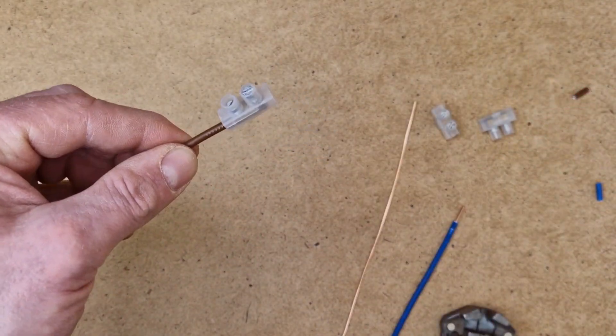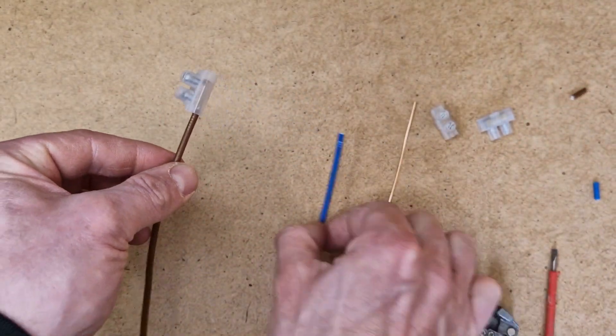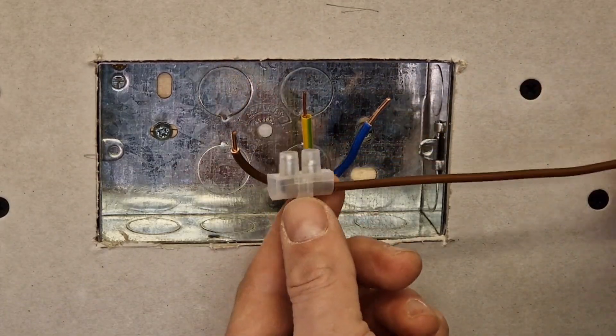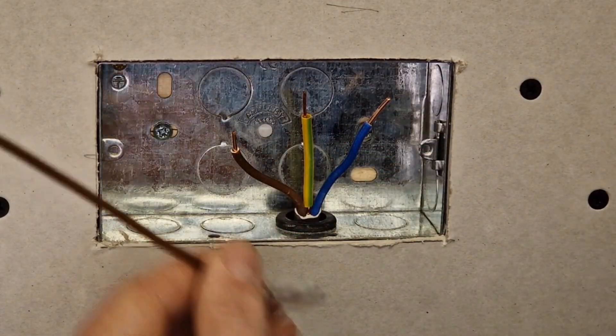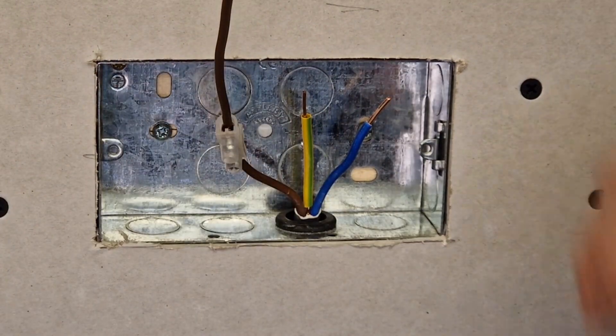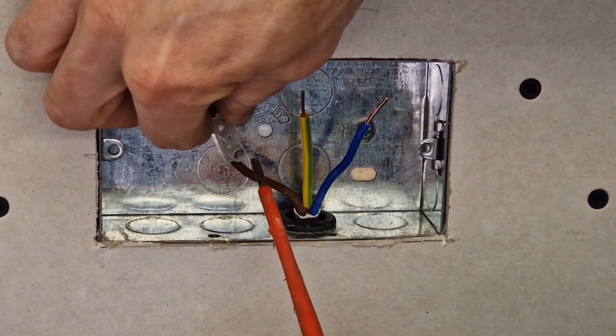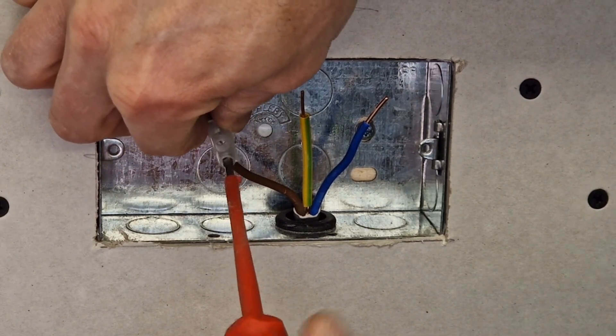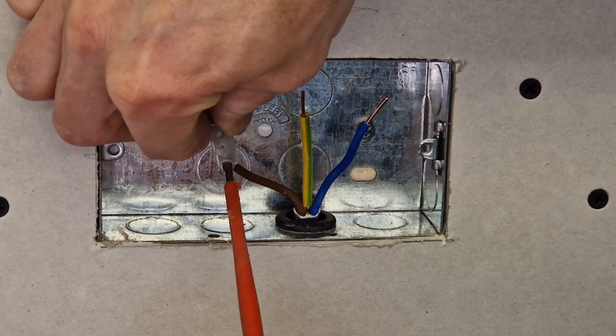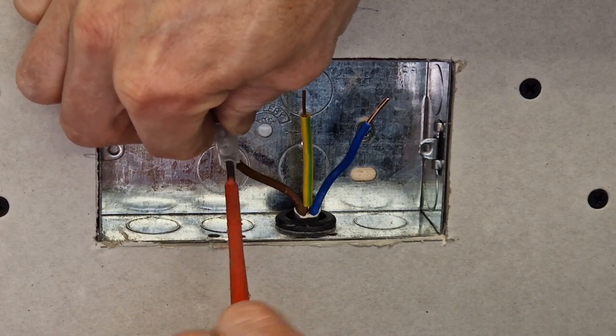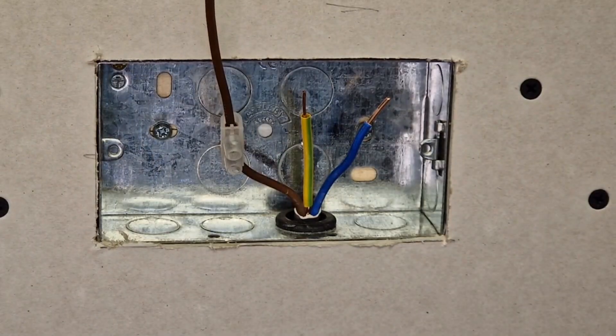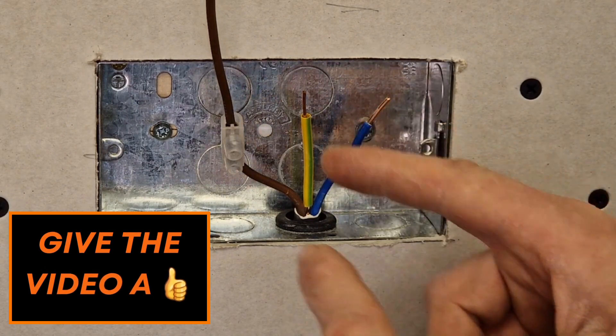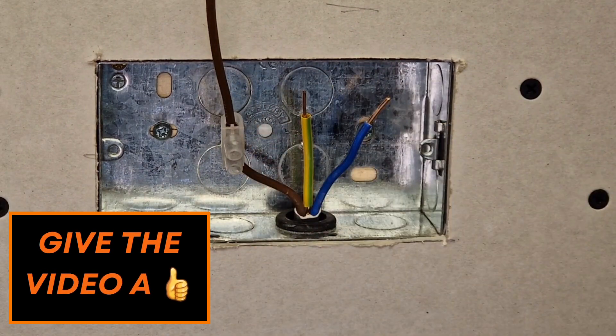So now we've got these cables with the connector blocks on, we can now attach them onto the existing conductors within the box itself. Same thing again, just tighten them up. Don't over-tighten them because that will compress the copper and potentially cause a high resistance joint or the cable could simply snap. Do the same method for each of these.